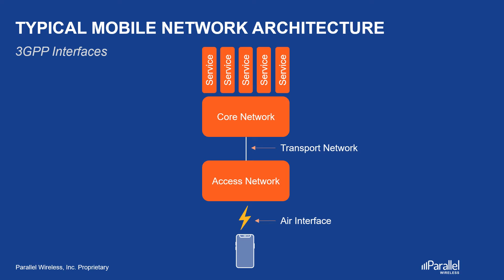Let's start with the basic architecture you have seen in our other videos. For today's video, let's use 4G LTE as an example, as it's easier to explain and more relevant for 5G discussions as well. The two interfaces from the RAN point of view are the air interface, also known as the Uu or LTE Uu interface, that uses the RRC protocol, and the S1 interface between the RAN and the core. Both of these interfaces are standardized by 3GPP and open, so no issues here.